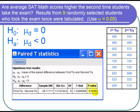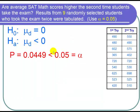What that says is if it really is true that the difference between the first try and the second try is equal to zero, then there would only be a 4.49% chance of obtaining a sample difference as small as negative 26.11111. Our alpha is 0.05, our level of significance, which says that if μ_d really is zero and we were to do a paired difference with 9 randomly selected students many times, then 5% of the time we will wrongly reject the null hypothesis. In particular, p is very small: 0.0449 is smaller than 0.05.